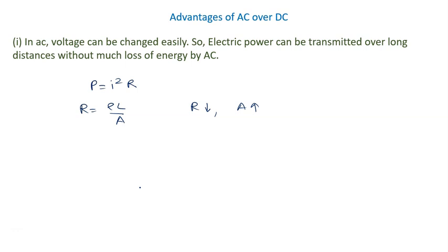So what we do: we know transmitted power is given by P = V × I. If we increase the voltage, power is transmitted at high voltage from one station to another station.